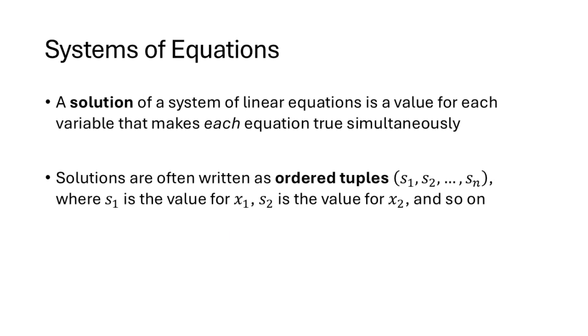A solution of a system of linear equations is a value for each of the variables that makes all of the equations true simultaneously. We can write our solutions as ordered tuples, which is parentheses with the values of the variables listed in between the parentheses separated by commas. The first value is the value of the first variable, the second value is the value of the second variable, and so on.